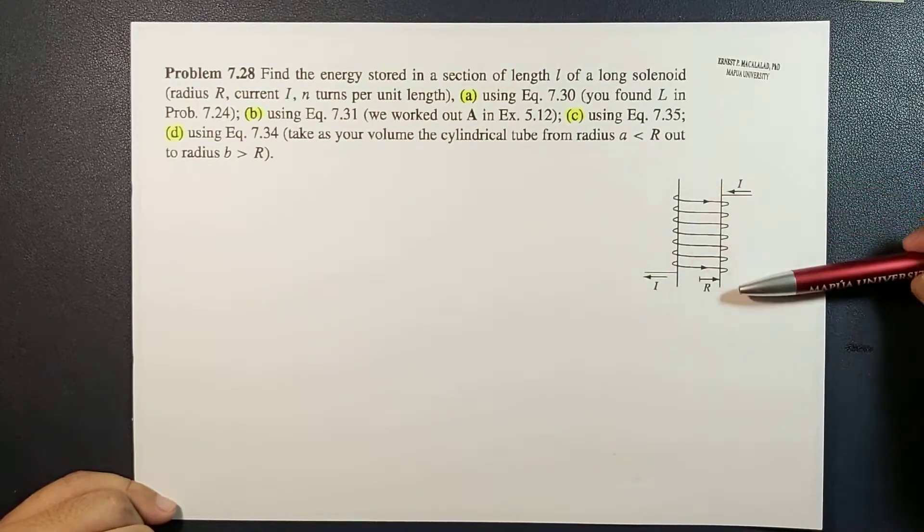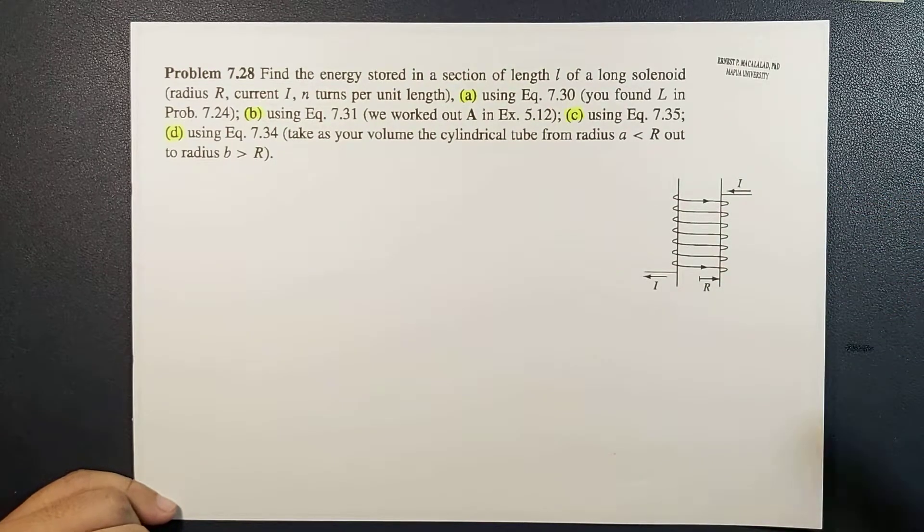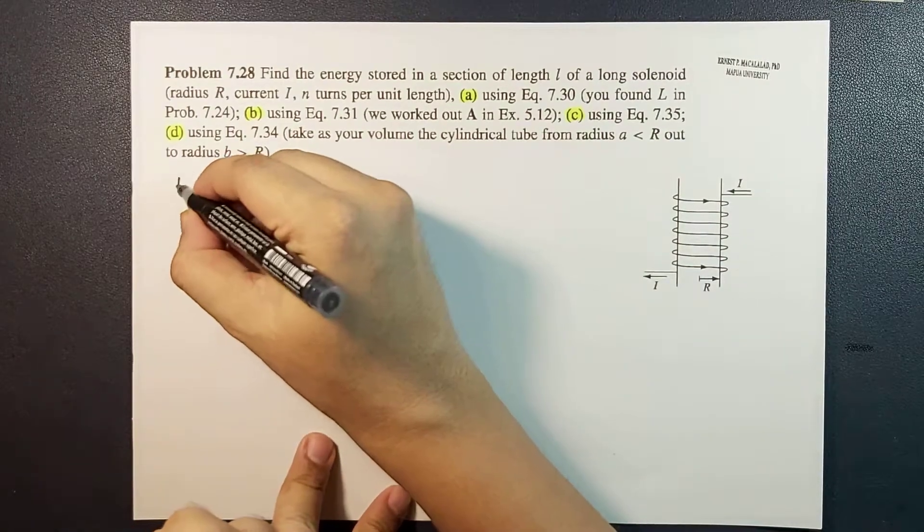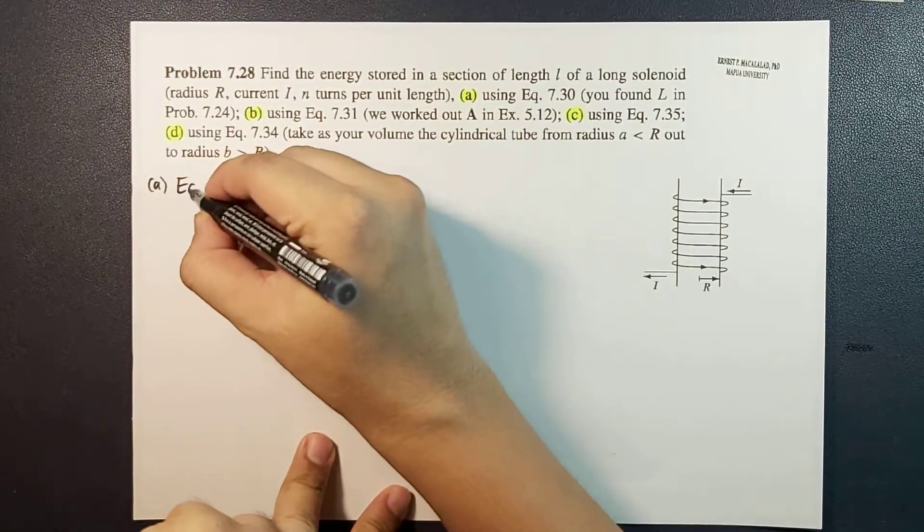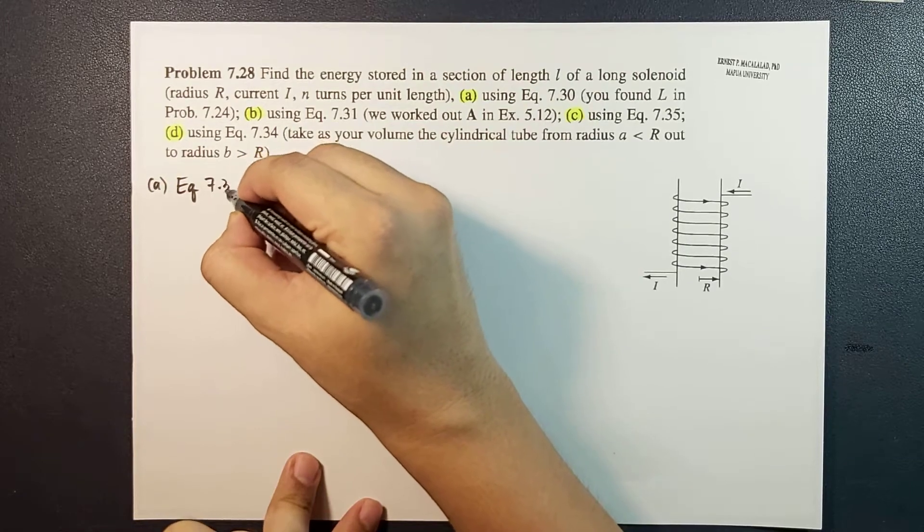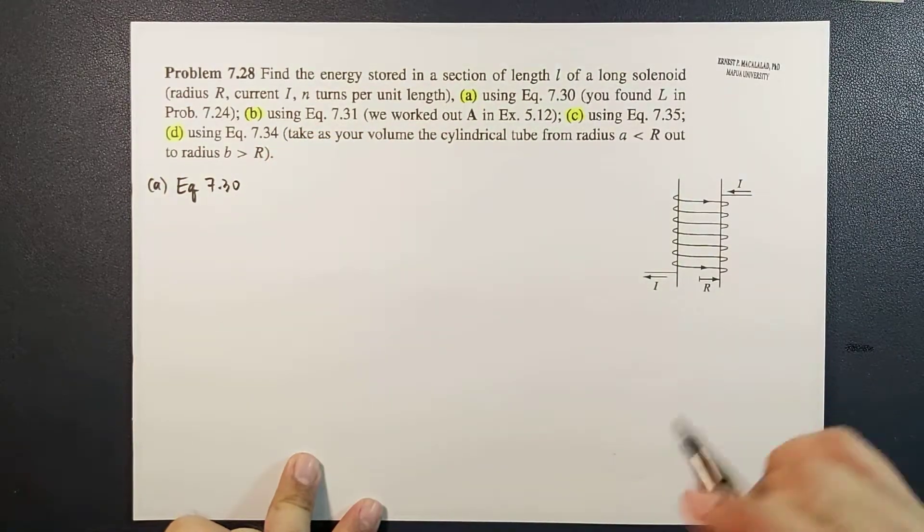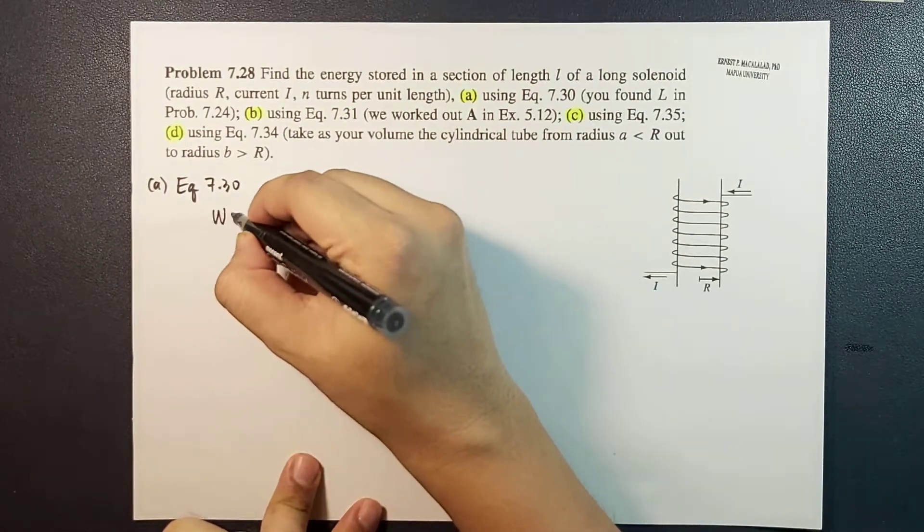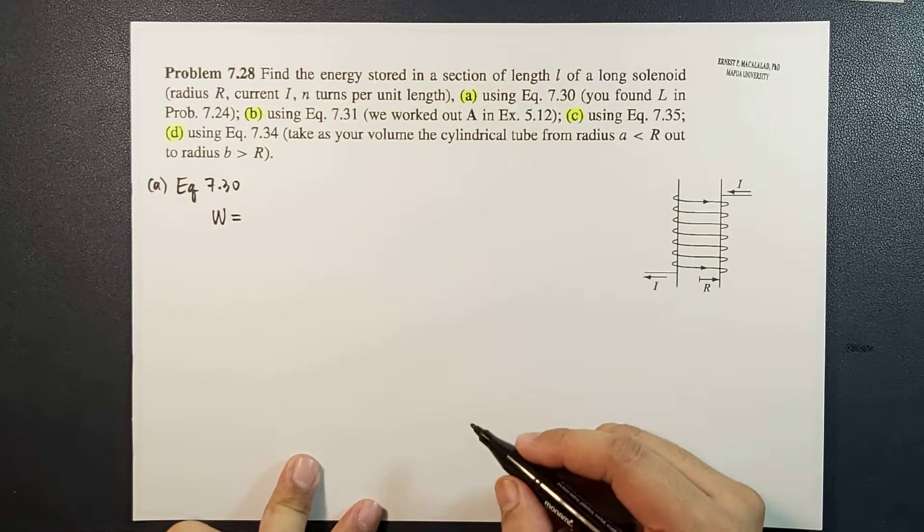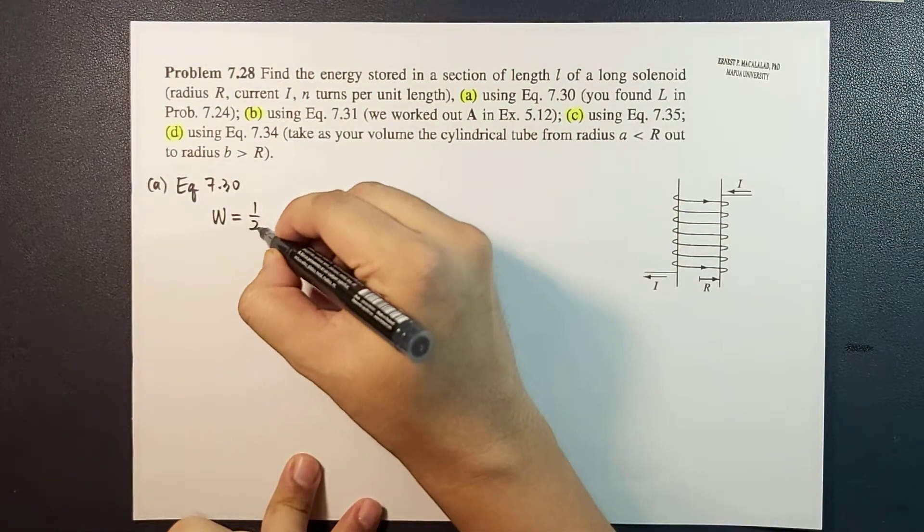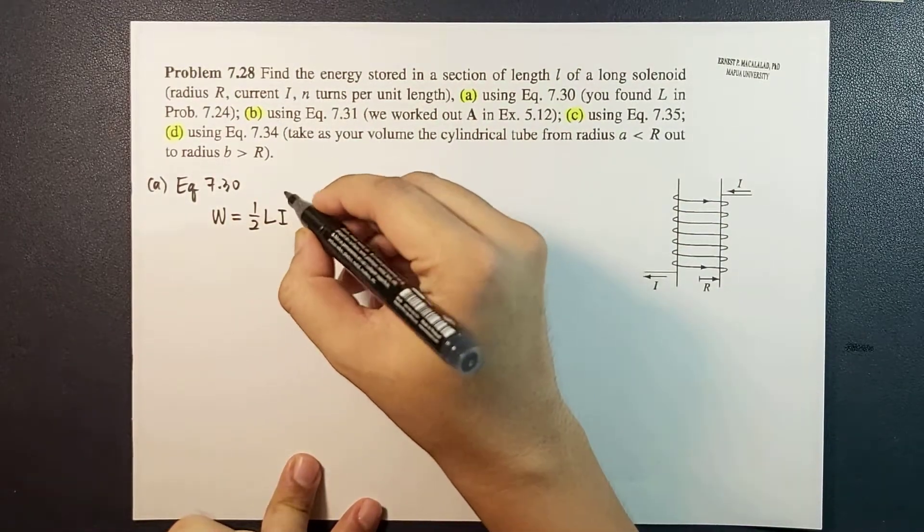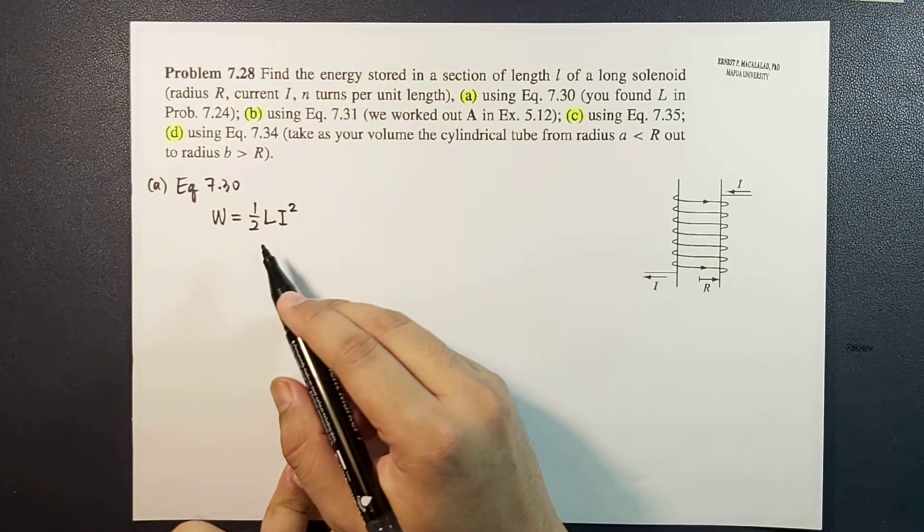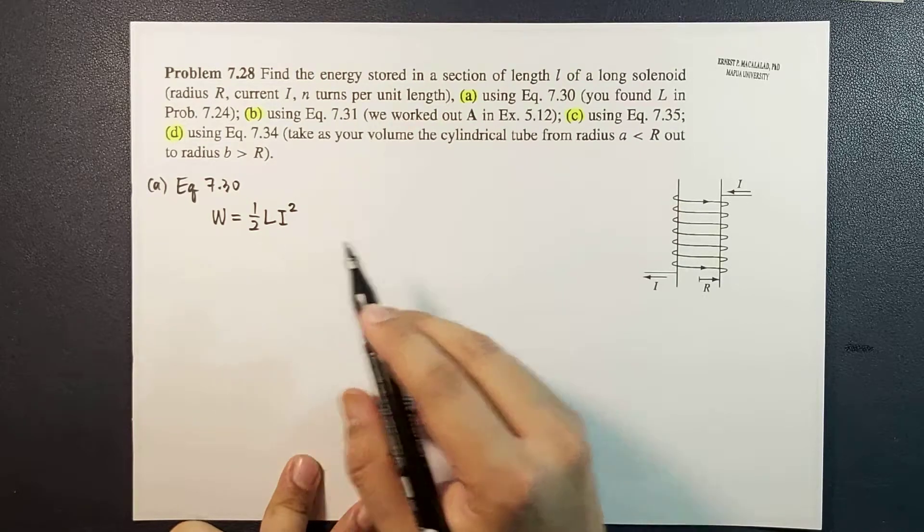For letter a, let's use equation 7.30. Equation 7.30 states that the work done, or the energy stored which is equal to the work done, is equal to one half times L times i squared, where L is the inductance of your coil.